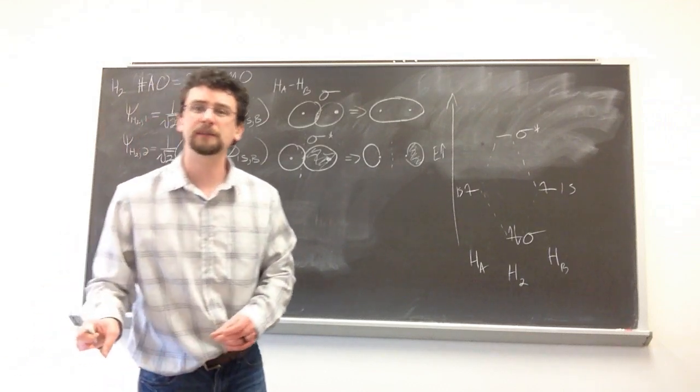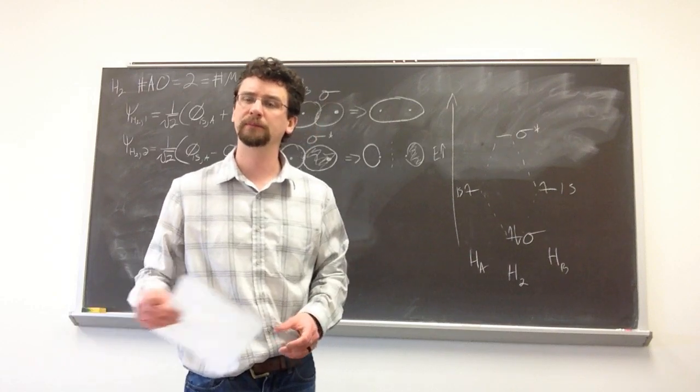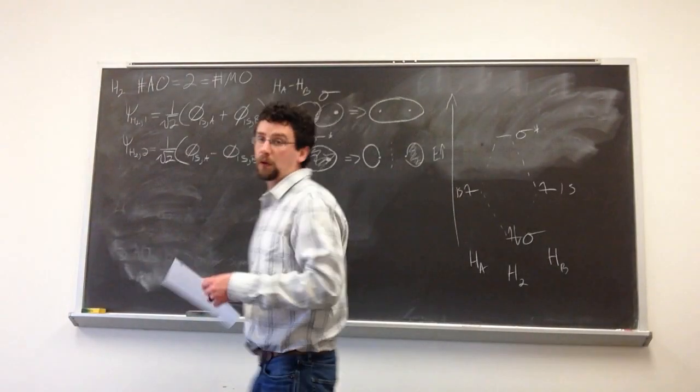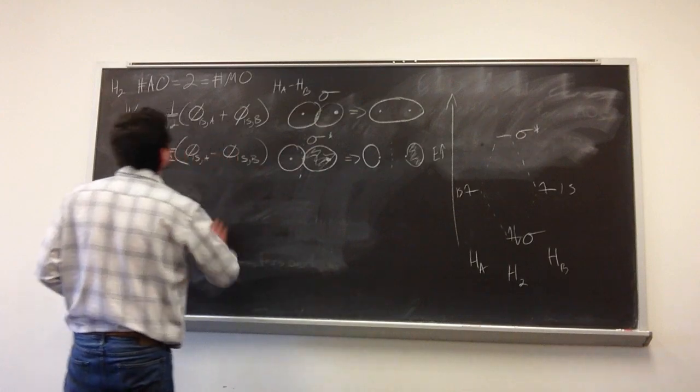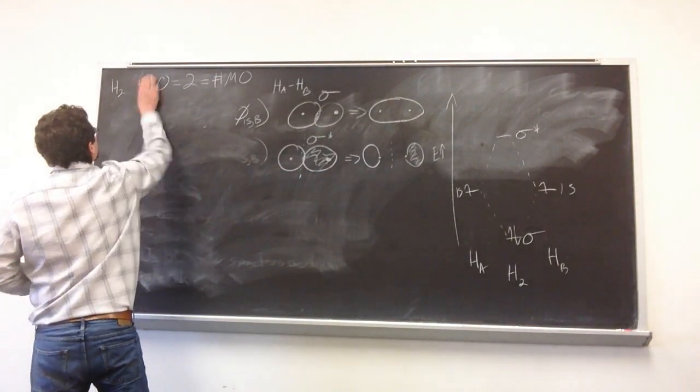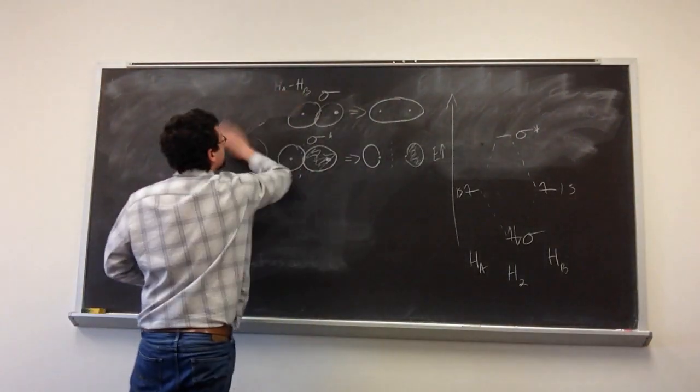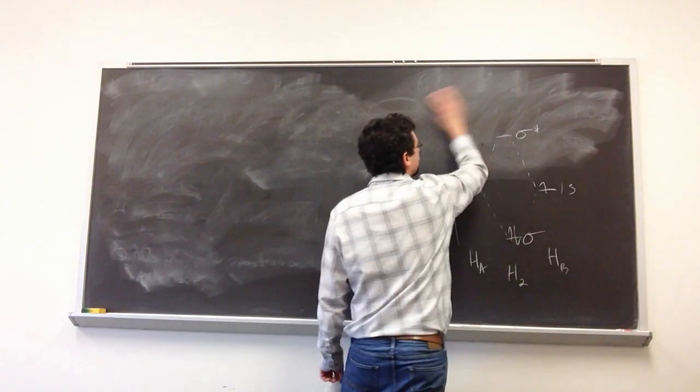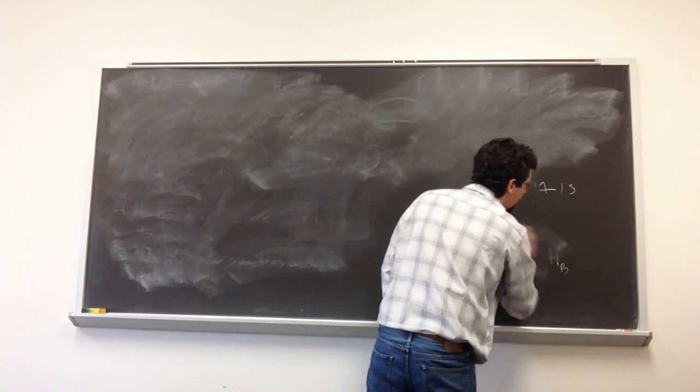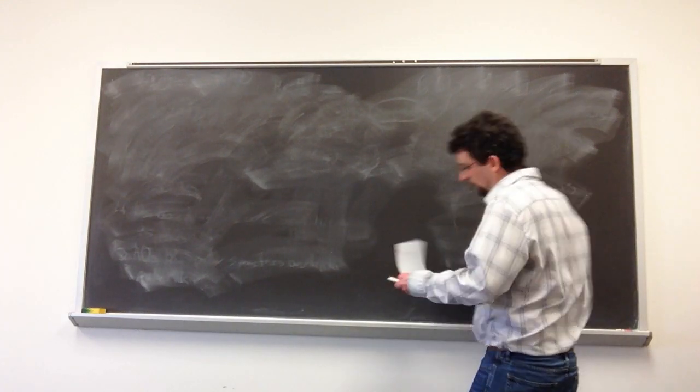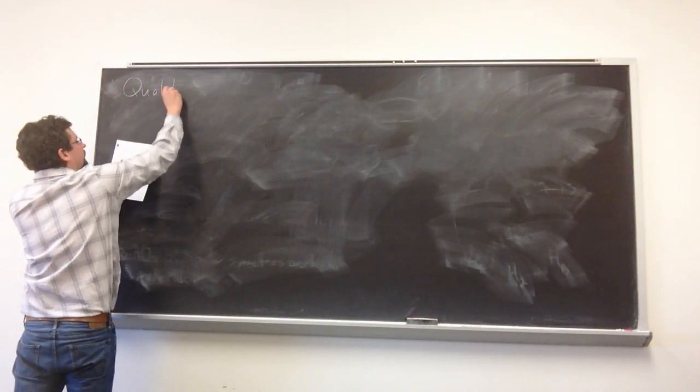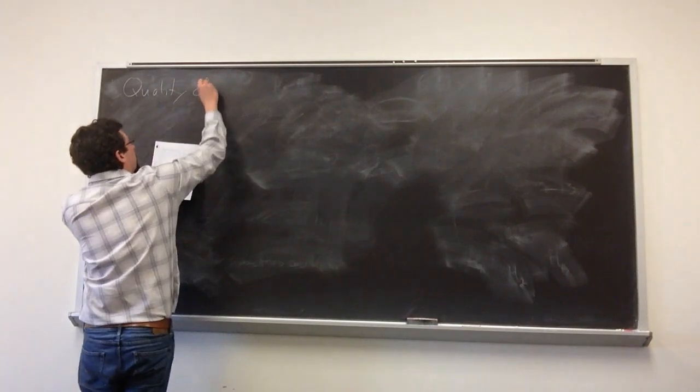So that's a pretty simple MO diagram. But let's talk about other characteristics or other things you have to look out for when drawing molecular orbital diagrams. The first thing we're going to discuss is the quality of overlap. So the quality of overlap is determined by one, the symmetry; two, how far away the constituent atomic orbitals are from one another; and three, just the overlap itself.